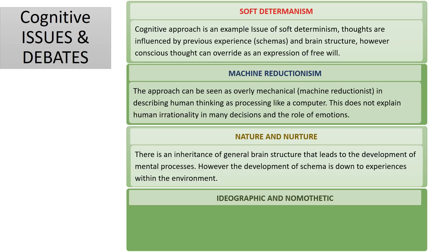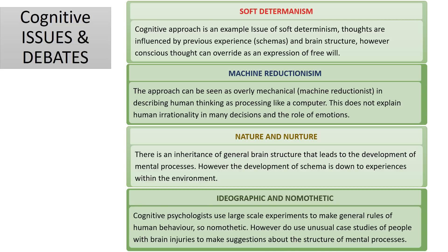Generally cognitive psychologists use large-scale experiments and use the results to make general rules for human behaviour, so we would say cognitive psychology is nomothetic. However, cognitive psychologists do also use case studies of unusual people with extreme brain injuries, and from their experiences make suggestions about the structure of mental processes — usually followed on later by large-scale experiments.